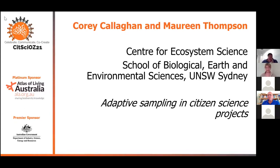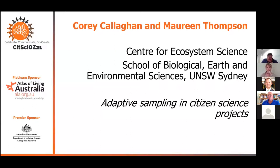Our goal here — first, we're going to record this as requested by the Citizen Science Association. The program for the next hour: Maureen and I will give a brief presentation on adaptive sampling and share some hot-off-the-press results. Then we'll go into breakout rooms — looks like about 20 participants, so three to four rooms — to discuss. I'm really keen to get feedback on adaptive sampling in citizen science projects.